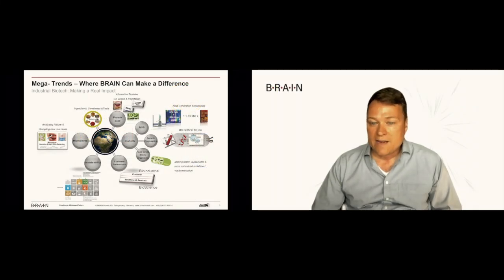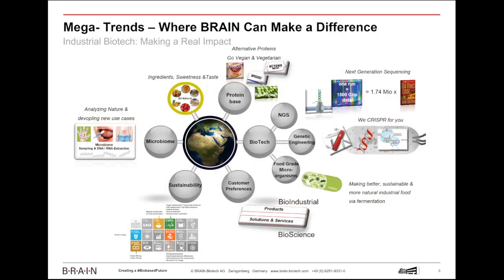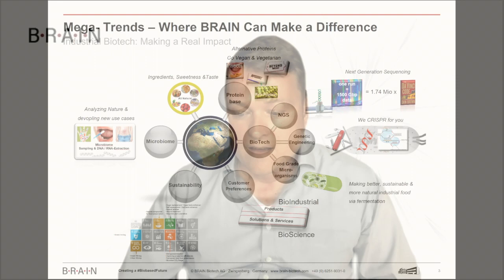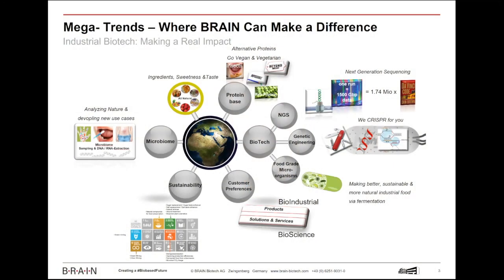In food grade microorganisms, we are essentially talking about biofactories, microorganisms who could produce better, more sustainable, and particularly more natural industrial food, for example, via fermentation. For our customer preference, Brain offers two solutions: either our products business, mainly enzymes in the bioindustrial division, or solutions and services in bioscience. We are basically looking at breakthroughs in all of these areas.